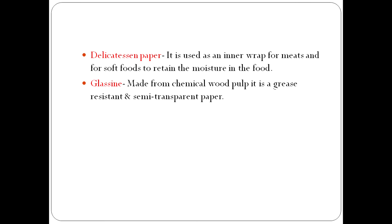Glassine is made from chemical wood pulp. It is grease-resistant and semi-transparent, and it may be waxed or laminated. Please remember: glassine is made of chemical wood pulp and is semi-transparent. Remembering small details like this is very helpful for MCQs, where you can make a good decision while choosing an answer.